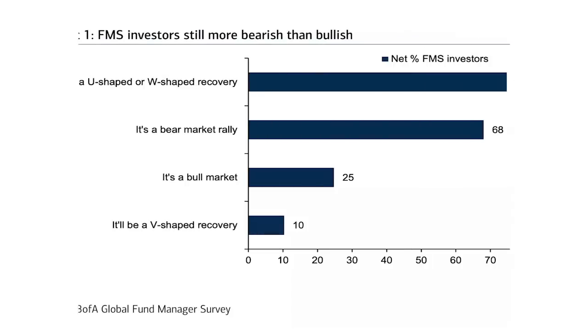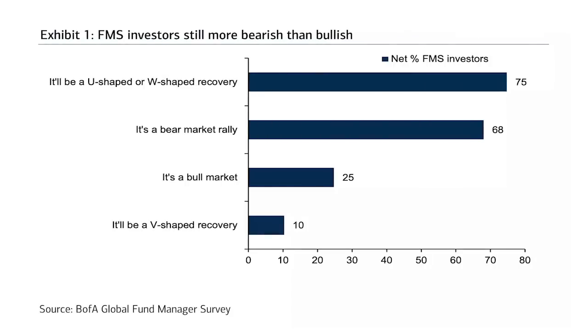The big question is whether the market recovery is justified based on the type of economic crisis we're facing from COVID-19. Let's first ask how fund managers feel. This comes from the Bank of America Global Survey of Fund Managers that just came out. The first chart shows that 75% of fund managers — the people who invest other people's money — believe we are looking at a U or W shaped recovery rather than a V shaped recovery, which is down at the very bottom. A lot of them feel we're either in a U or W shaped pattern or that this is a short-term bear market rally.